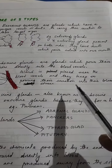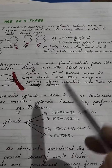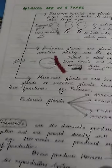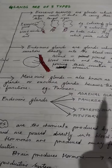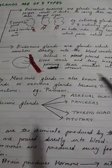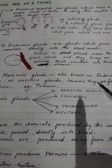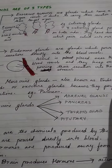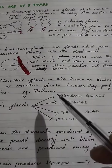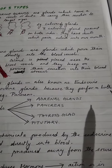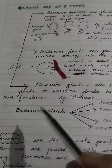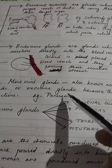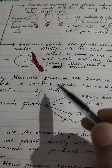Next, we have the metocrine gland, also known as a mixed gland because it performs both exocrine and endocrine functions. An example is the pancreas. We are going to learn all these glands one by one in detail.